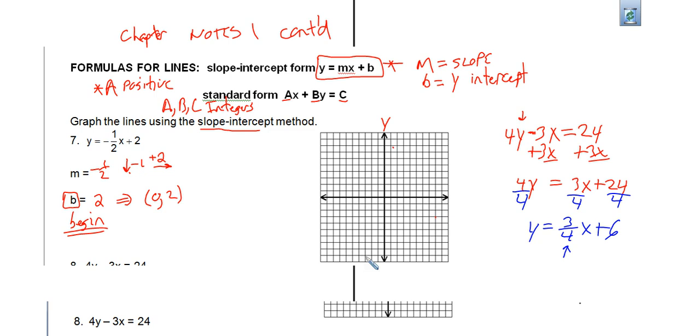So where do we begin? We begin by identifying our slope is equal to 3 fourths. And our y-intercept is at 6. So that tells me that I have a point 0, 6. And this is where I'm going to begin. So I'm going to go up this graph 6. Put my first coordinate point, 0, 6.